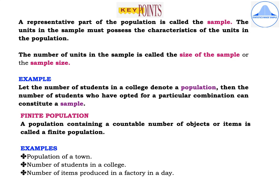The representative part of the population is called the sample. The units in the sample must possess the characteristics of the units in the population. The number of units in the sample is called the size of the sample or sample size. For example, the number of students in a college denotes a population, and the number of students who have opted for a particular combination can constitute a sample.